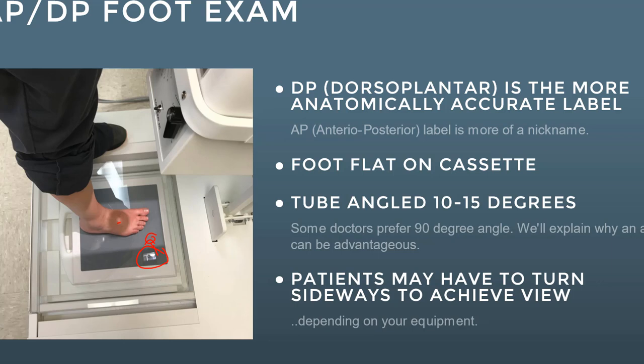The tube is angled 10–15 degrees. Some doctors prefer a straight-on shot or a 9-degree angle — don't question the doctor on that, as some prefer it. But most will go with the 10 to 15 degree angle. Note: the collimator light is simply a measurement tool showing you where the x-rays will hit — it's not required to be on the patient when you shoot. The light is controlled by the collimator dial.